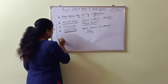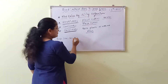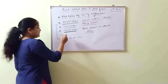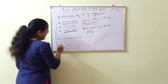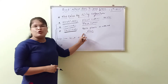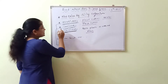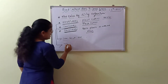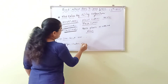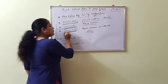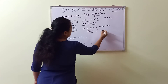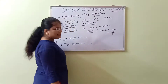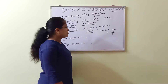For examples: herbivores include cow and goat, which feed on plants. Carnivores, the flesh eaters, include tiger and cheetah, which totally depend on other organisms for food. Omnivores include crow and human beings — we eat both plants as well as animals.